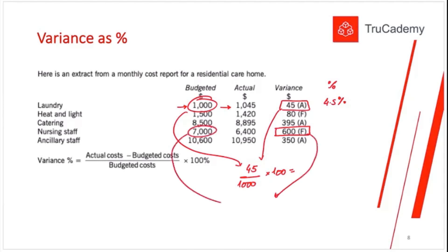For nursing staff, take the variance and divide it by the budget: 600 divided by 7,000 equals approximately 8.6 percent. A manager, just by seeing this percentage, will get an idea that it's a favorable variance — our actual performance is 8.6 percent better than expected. This percentage helps the manager get information quickly in a more meaningful and easier-to-understand format.